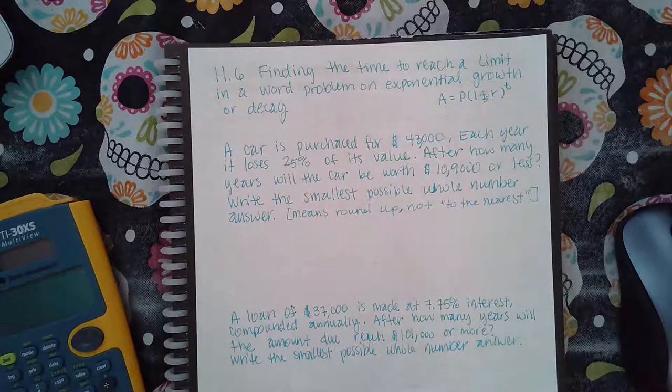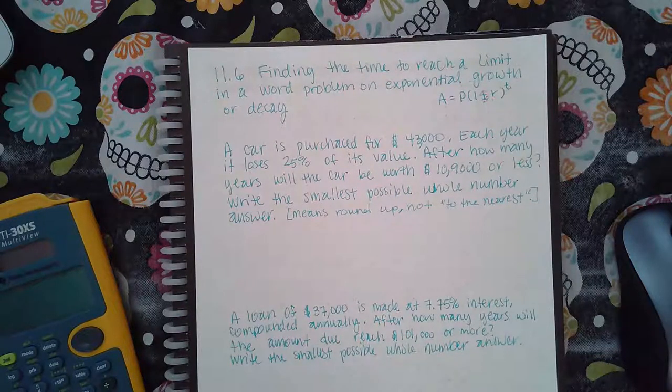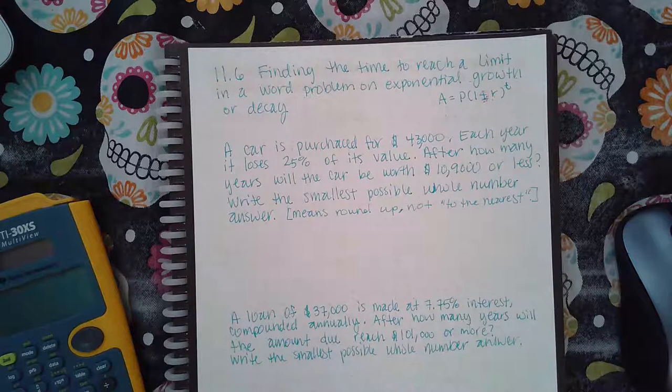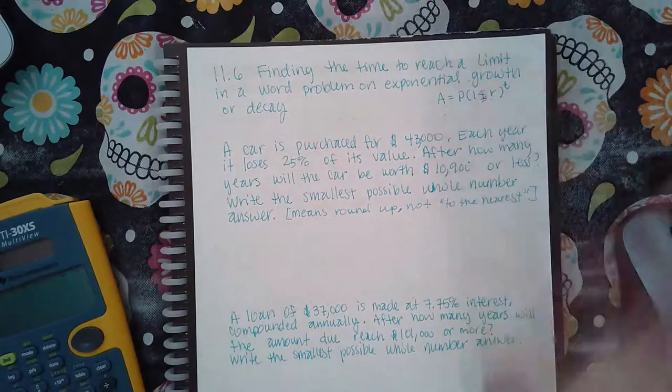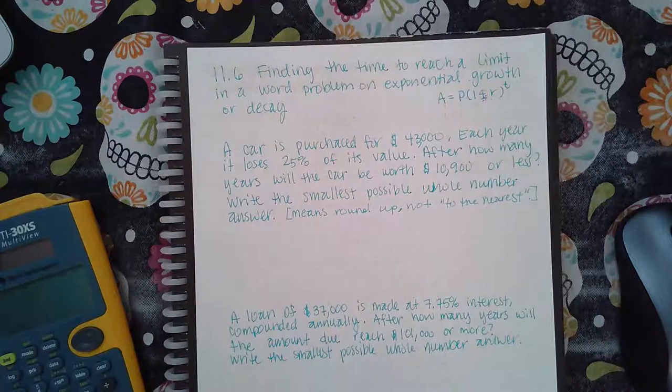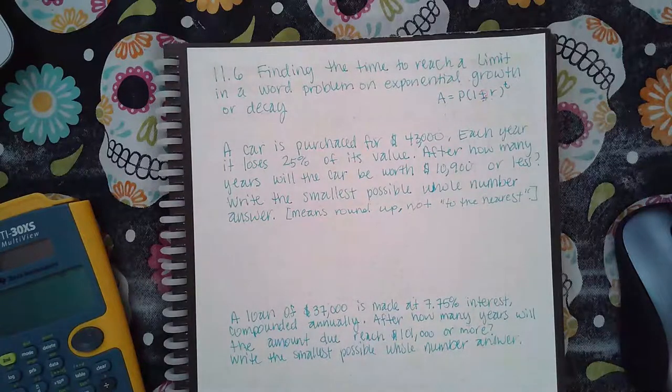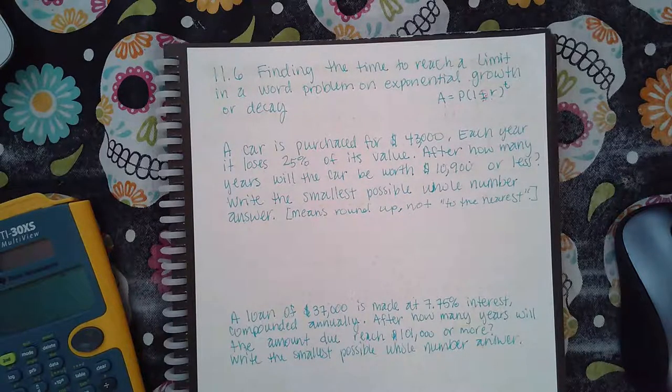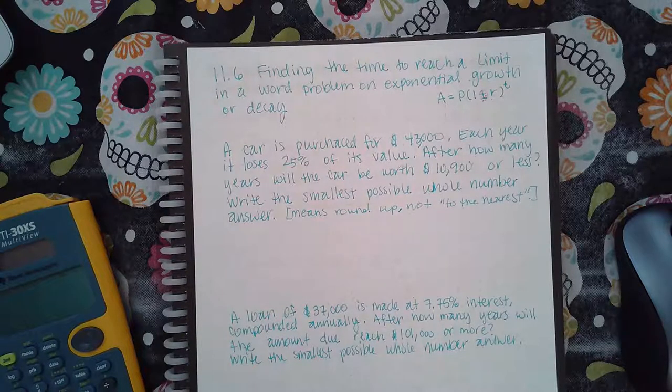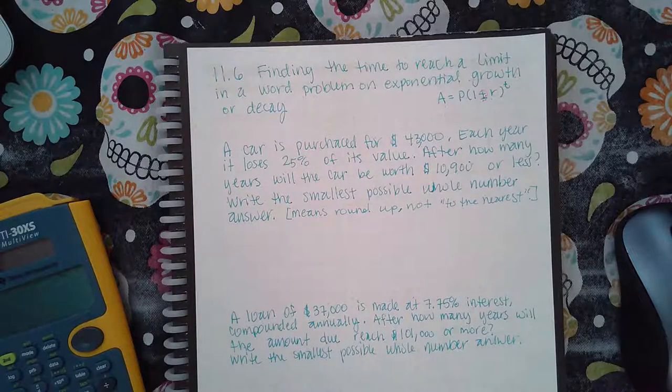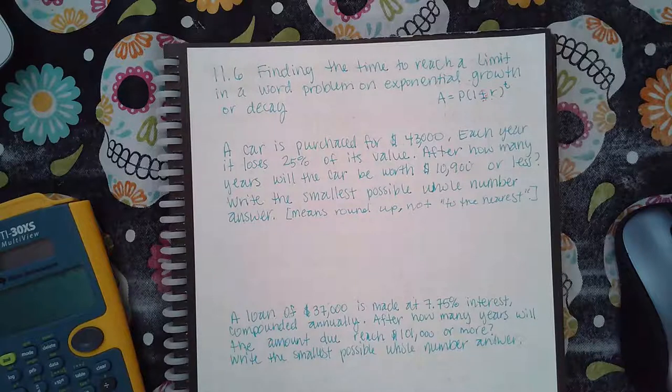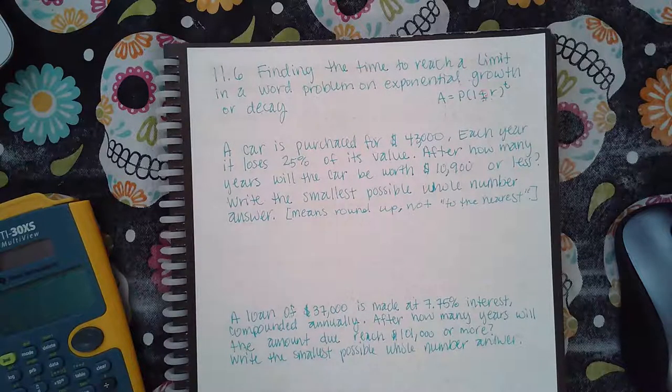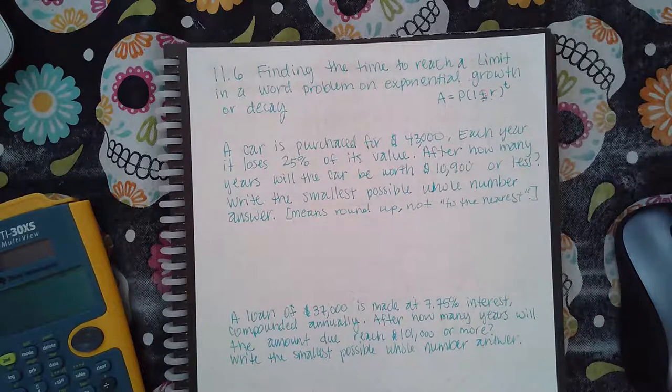The first example says, a car is purchased for $43,000. Each year it loses 25% of its value. After how many years will the car be worth $10,900 or less? Write the smallest possible whole number answer. And that means round up, not to the nearest. Normally you round to the nearest. So if you get 2.4, it stays a 2. And if you get 2.5, it goes up to 3. But here it doesn't matter what the decimal is. If it's 2.anything, it goes up to 3. So 2.1 will round up to 3, no matter what. That's what they mean by the smallest possible whole number.